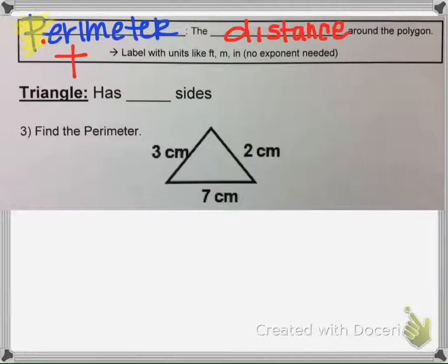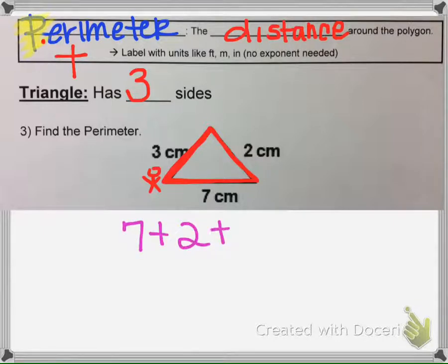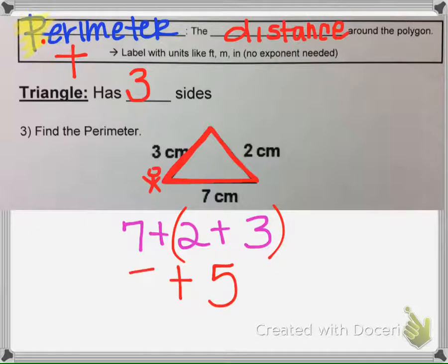So if we take this triangle, this is called a triangle, it has 3 sides. And imagine you were a person and you were to walk all the way across here. That means you walk 7 centimeters, and then you turn and you go 2 more centimeters, and then you go 3 centimeters. Perimeter is what we call if we go all the way around, the total when we go all the way around an object. So 7 + 2 + 3, we get 12.